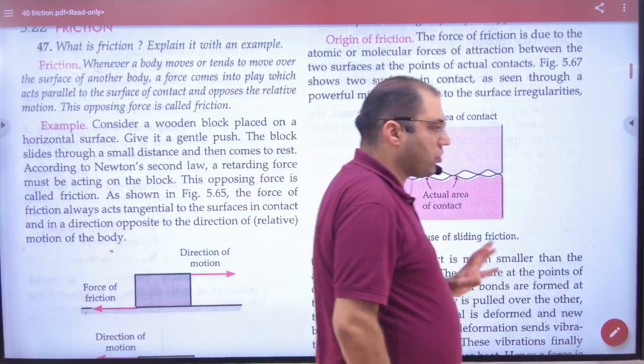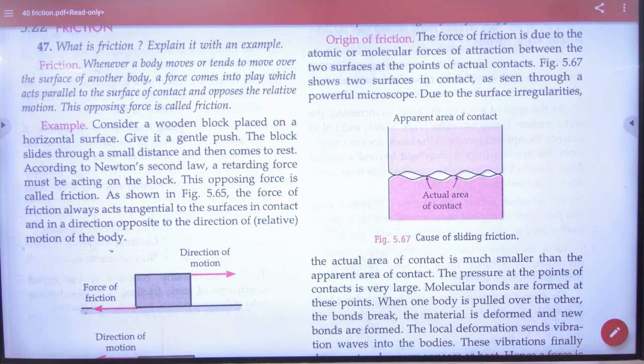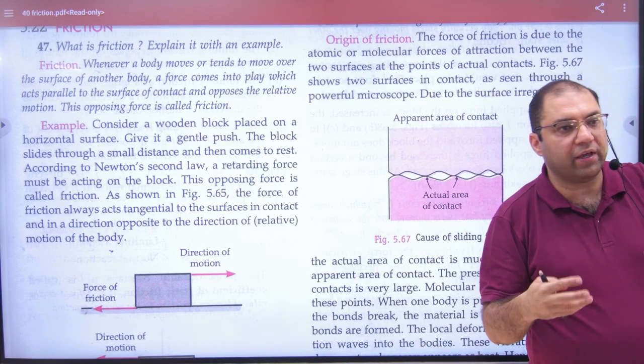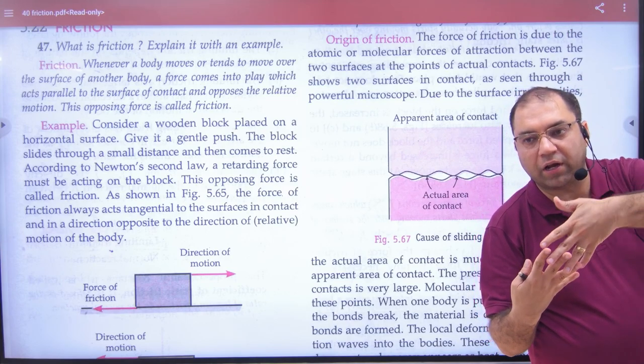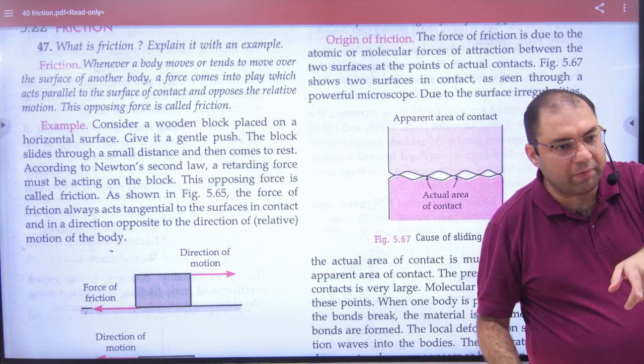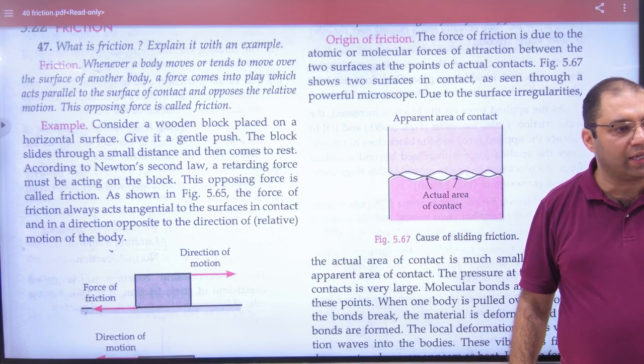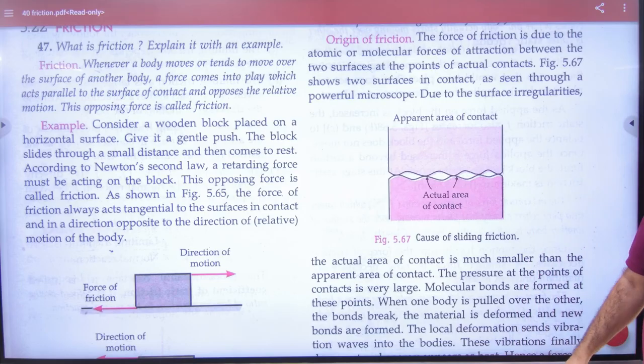The origin of friction has been explained. The force of friction exists between two surfaces in contact. The surfaces are not smooth but have irregularities that interlock, creating friction. This is what causes the frictional force.